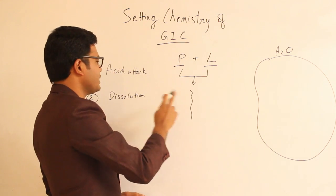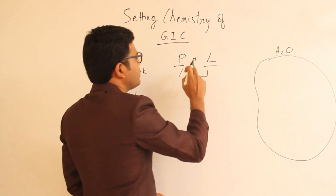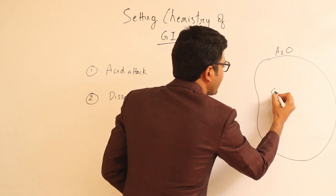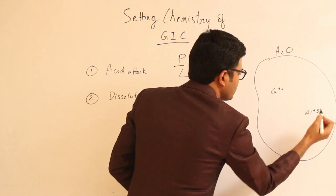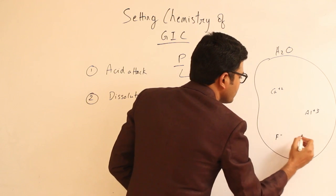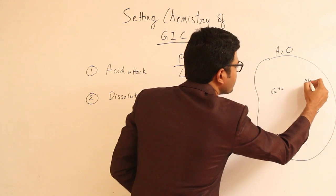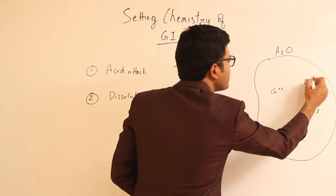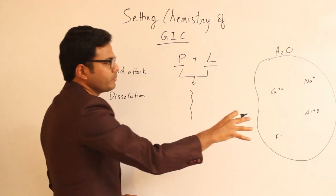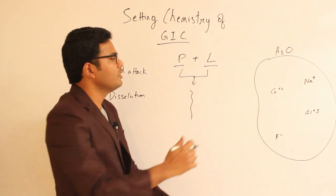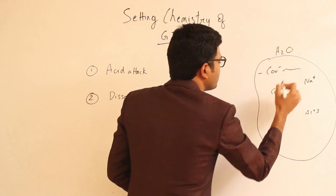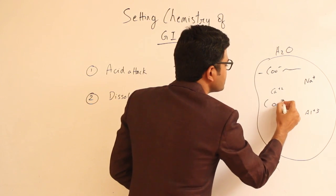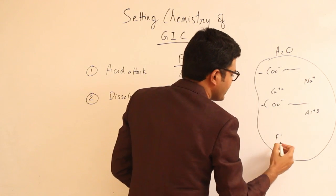In the dissolution phase, the various cations present in the powder—calcium, aluminum, fluoride, and sodium—are released into this reaction medium. Apart from these ions, we have various carboxylic acid chains, which are nothing but polyacrylic acid.